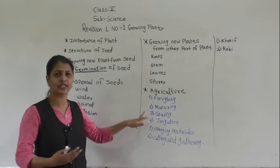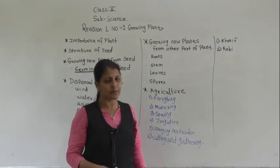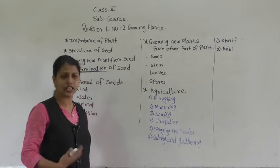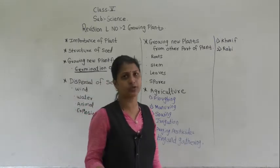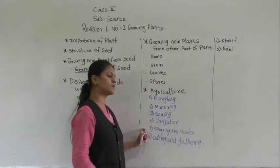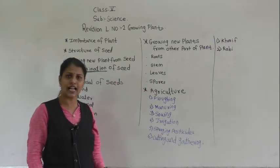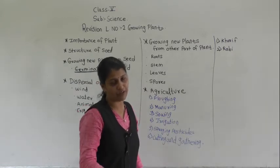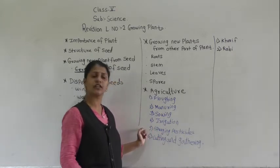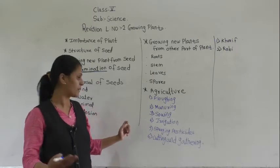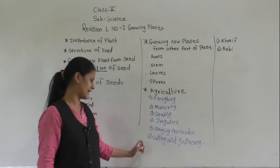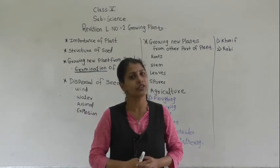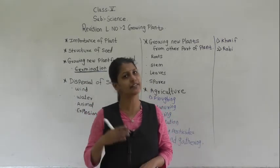Third is sowing — spreading the seeds for growth. Fourth is irrigation — giving water to the plants. Fifth is spraying pesticide — this kills insects that affect the plants. The sixth and last step is harvesting — cutting the plants.